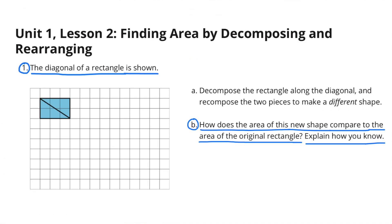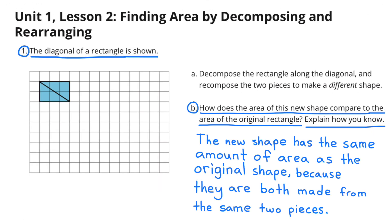Part B: How does the area of this new shape compare to the area of the original rectangle? Explain how you know. The new shape has the same amount of area as the original shape because they are both made from the same two pieces.